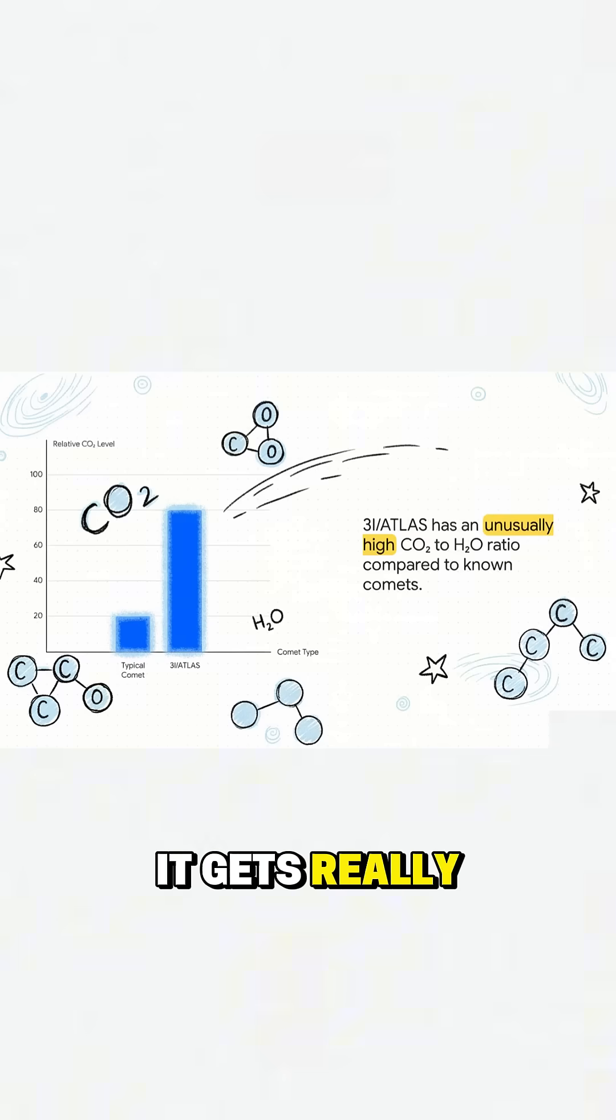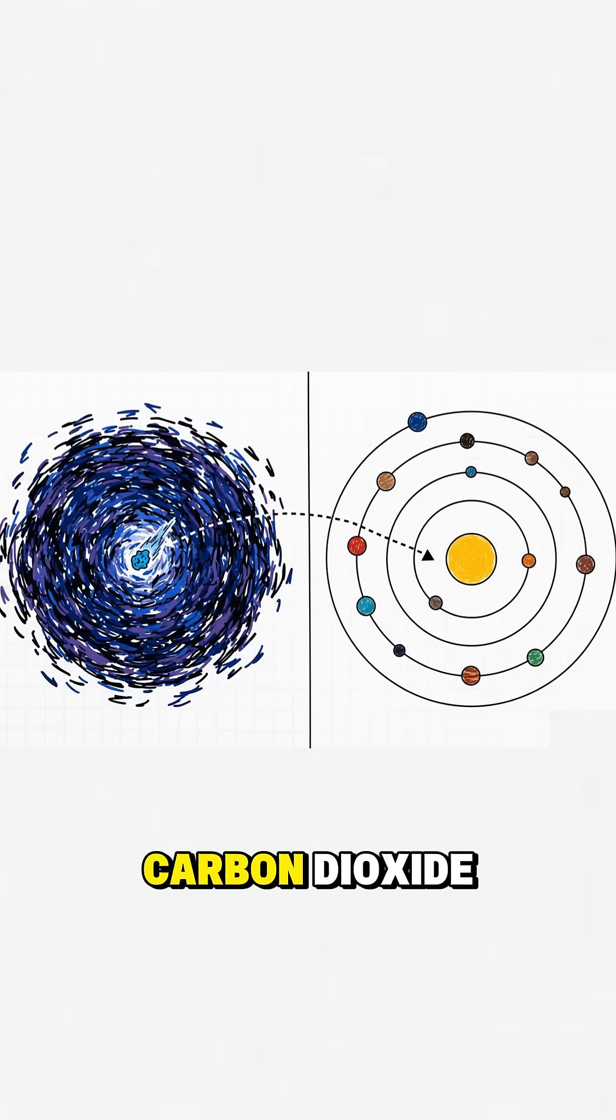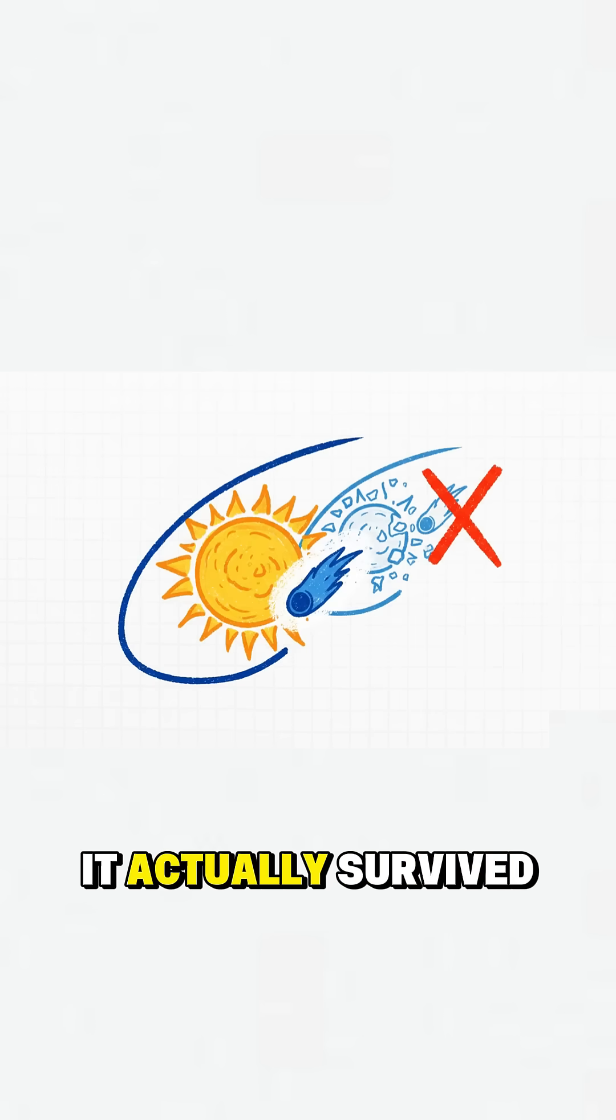And here's where it gets really interesting. Its chemical makeup is pretty weird. It's packed with carbon dioxide. That hints it came from a very different kind of star system. And get this, it actually survived its trip around our sun, which is a big deal.